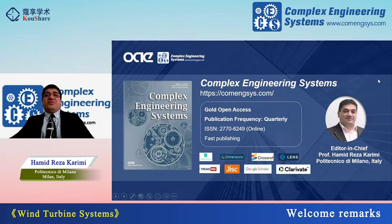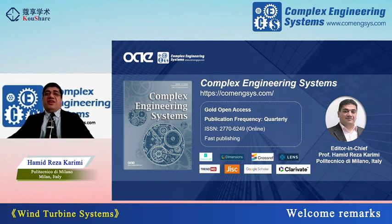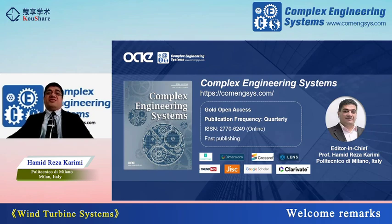Regarding the Journal of Complex Engineering Systems, this is a Gold Open Access journal. It was launched in 2021, and you can see some information about the journal on this page. We aim for high-quality publishing in a reasonable time. The journal is already indexed in some databases, as you can see on the webpage.